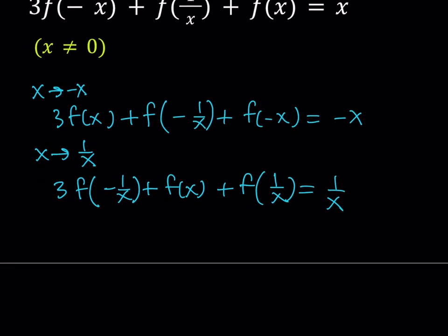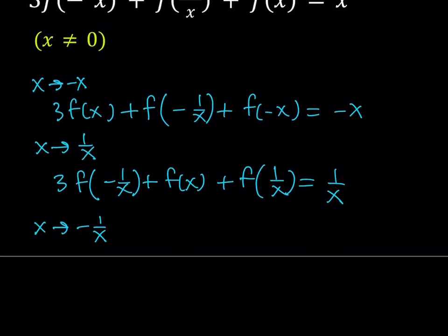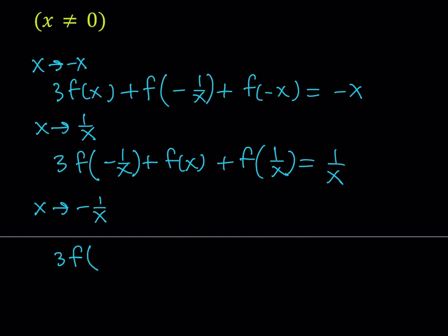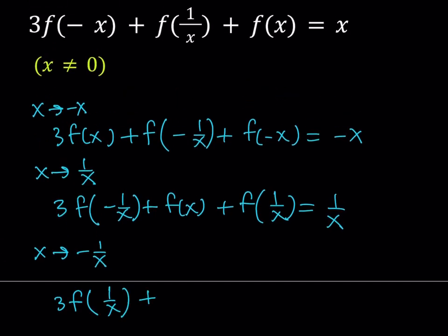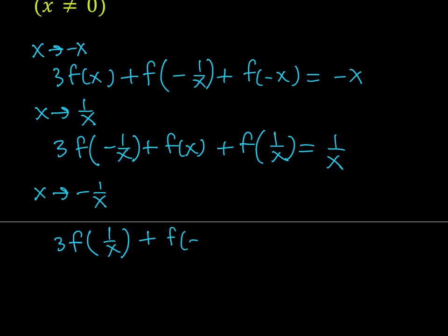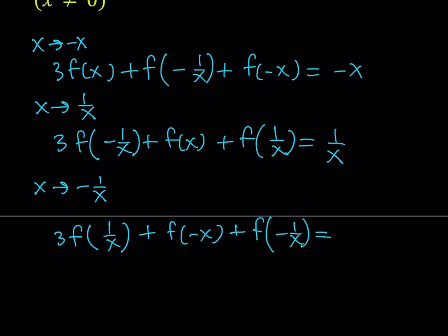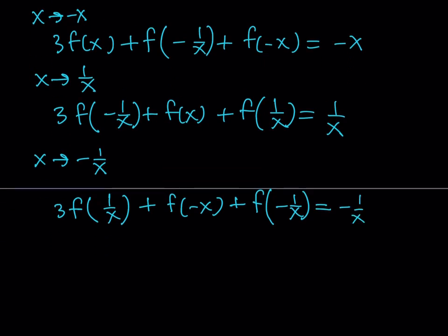The third substitution is replacing x with negative 1 over x. Notice this makes sense because I got f of negative 1 over x which I still need to handle, while f of x and f of negative x already appear in earlier equations. Replacing x with negative 1 over x gives: 3 times f of 1 over x, plus f of negative x, plus f of negative 1 over x, equals negative 1 over x.